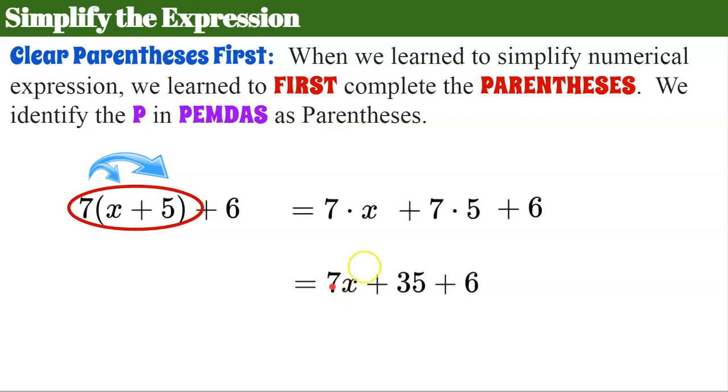So 7x, 7 times 5 is 35, and then my adding 6. Now I need to identify that these are like terms, so they need to be combined for this expression to be in simplest form. So I have 7x and 35 plus 6 is 41. So this expression in simplest form is 7x plus 41.